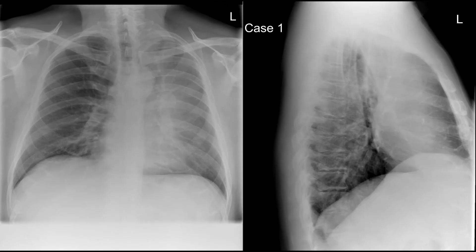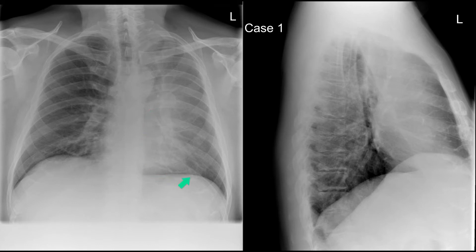Here is an example. You can see the increased density of the collapsed lobe. The incident beam is virtually perpendicular to the interface, and therefore you don't see the interface on the PA film. Note that there is some volume loss. As the left upper lobe collapses in an extreme fashion, the volume becomes so low that the apical segment of the left lower lobe now hyperexpands and abuts the aortic knuckle, allowing the aortic knuckle to be seen.